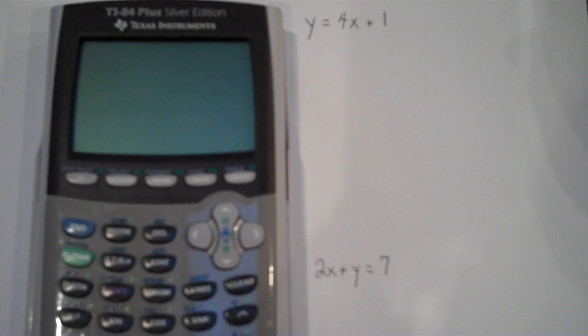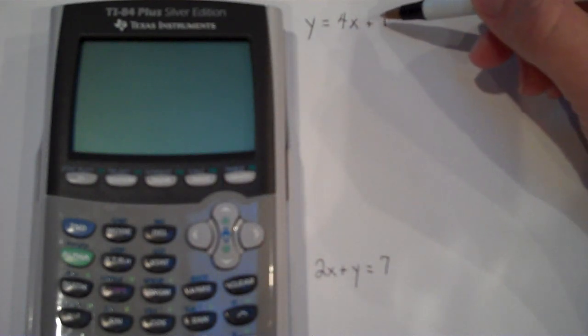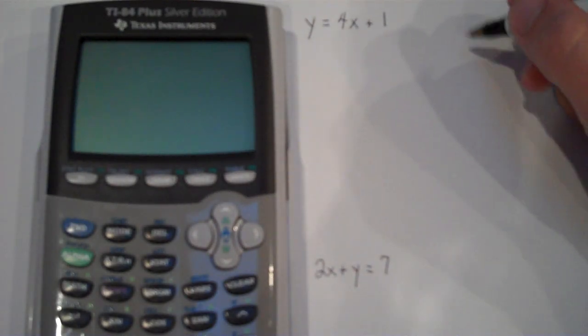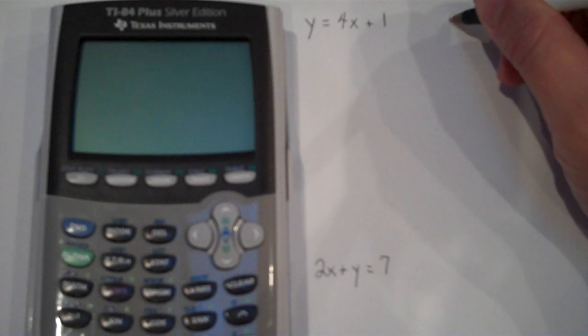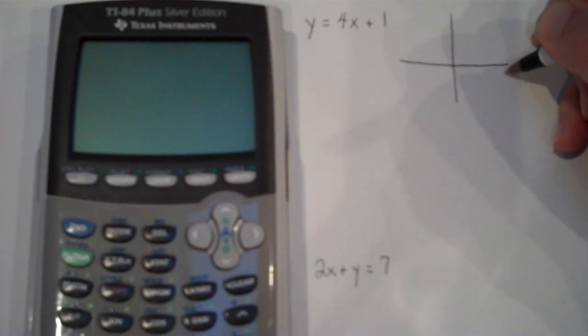I just wanted to provide some instruction for you on how to use the calculator and use it for graphing. So I'll just take a couple of simple problems here. Y equals 4X plus 1. I'd like to graph that on the Cartesian coordinate system. So I'm going to go ahead and draw my XY coordinate system here. It's best if you use graph paper so you can really be more accurate.